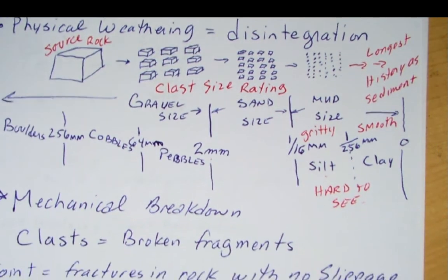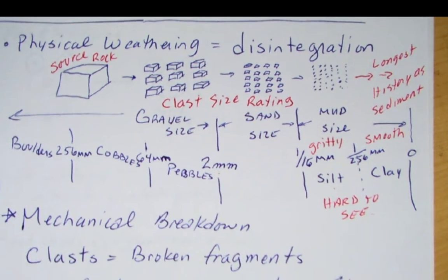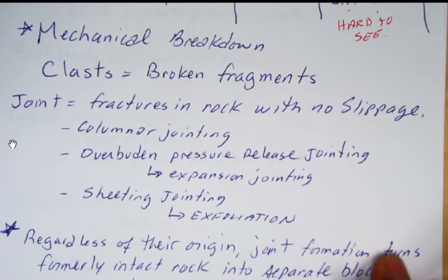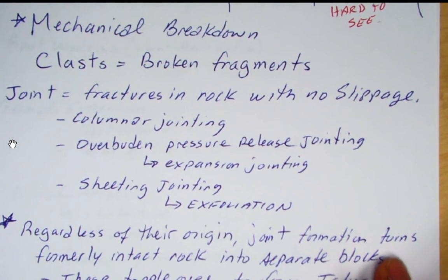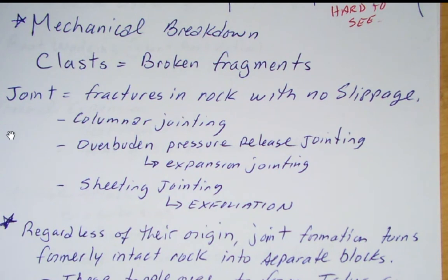Continuing with physical weathering — remember, physical weathering is a mechanical breakdown. These clasts are broken fragments. When you look at a sandstone, every grain of sand in that sandstone is a clast — a broken fragment now stuck together in the new rock. Your book has a section on joints. Joints are fractures in rocks where there's no slippage, because once you get slippage on that fracture you have a fault. A joint is a fracture where there has been no slip.